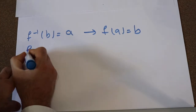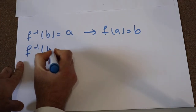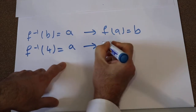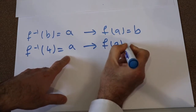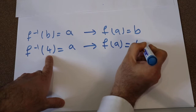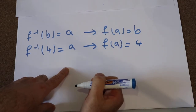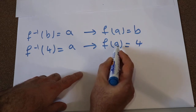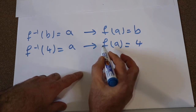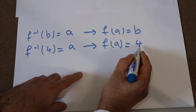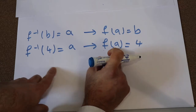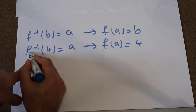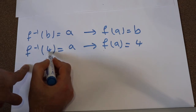So therefore, f⁻¹(4) is equal to — let's assume that's equal to A. Then you can conclude that f(A) is equal to 4 using this formula. So all you need to do is find the value of A at which function f is equal to 4, and that will give you the inverse of this function at point 4.